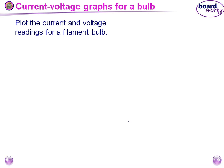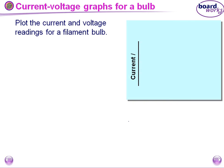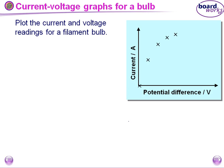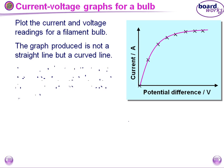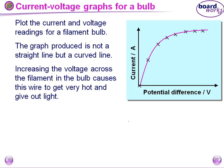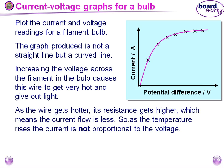Now we have to plot the current-voltage graph for a bulb. The graph produces not a straight line but a curved line. Increasing the voltage across the filament causes the wire to get very hot and give out light. As the wire gets hotter, its resistance gets higher, meaning current flow is less. So as temperature rises, the current is not proportional to voltage.